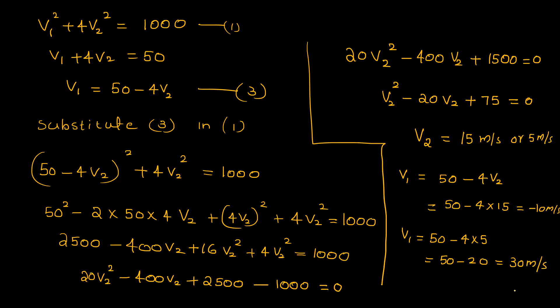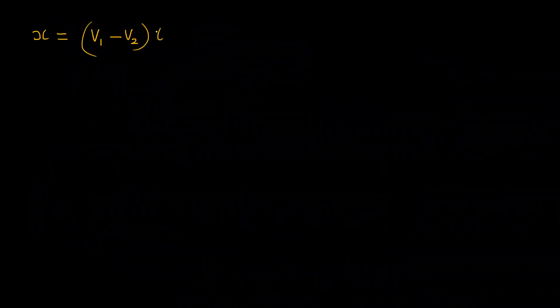Now we calculate the separation distance X. The distance X equals the relative velocity (V1 minus V2) multiplied by time T. With V1 equal to 30 and V2 equal to negative 10, the relative velocity is 30 minus (negative 5), multiplied by time T equal to 1.77 seconds, giving a separation distance of 44.25 meters.